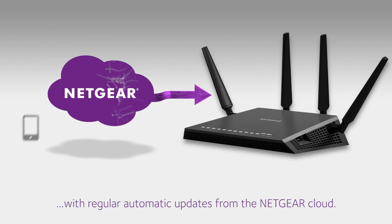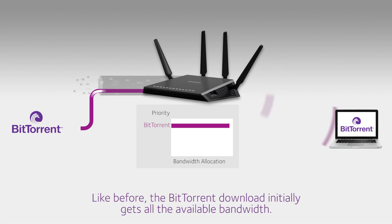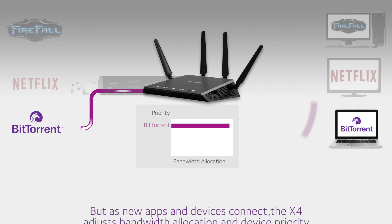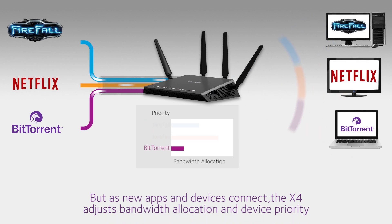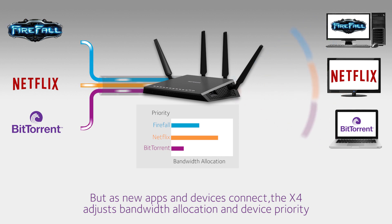Now let's see the difference dynamic QoS makes. One click in the X4's user interface turns on the router's dynamic QoS. As before, when the laptop begins the BitTorrent download, the router allocates the available bandwidth for it. But now, when the Netflix video and the online game begin, the X4 adjusts the bandwidth allocation, giving less bandwidth and lower priority to the BitTorrent download.